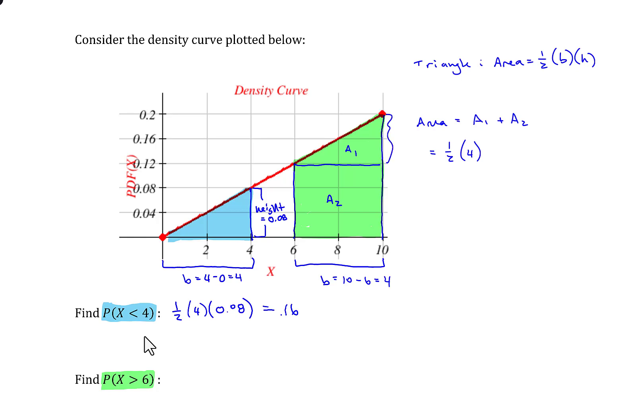And then the height of the triangle. The height of the triangle here is going to be the upper part here, which is at 0.2 minus the lower bound of the triangle, which is 0.12. So subtracting that gives me 0.08. And it turns out that that's the same size triangle as we just calculated. So I'll just take advantage of that. That's 0.16.